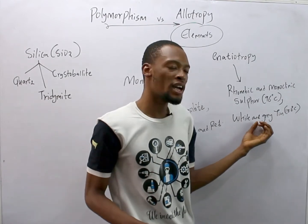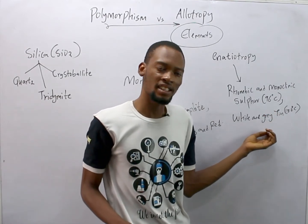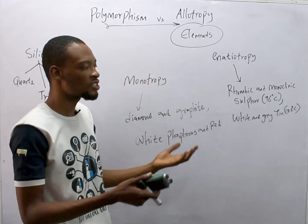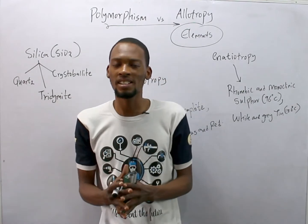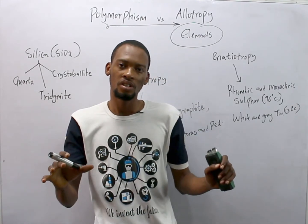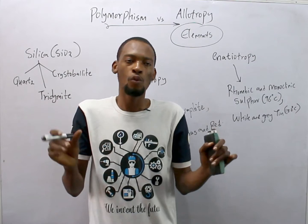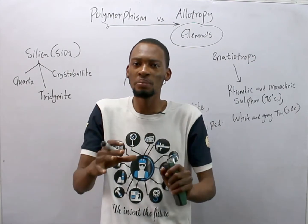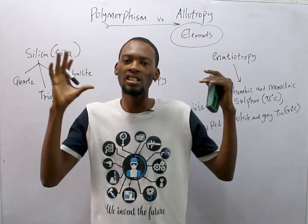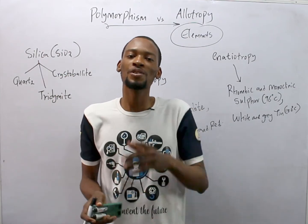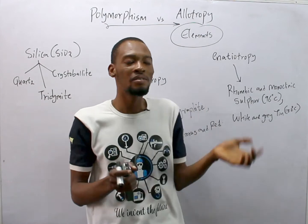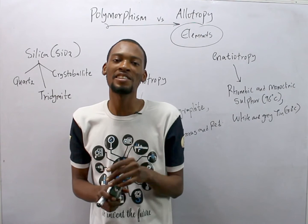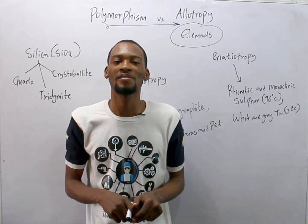Some allotropes require a transition temperature to exist in that state, while others do not. In summary, polymorphism is the existence of a substance in different forms under the same physical state, while allotropy is restricted to elements only. Polymorphism is the general umbrella term. Thanks for watching, and don't forget to subscribe to this channel for more amazing videos.